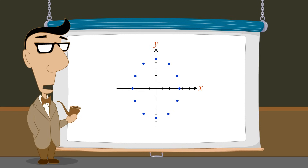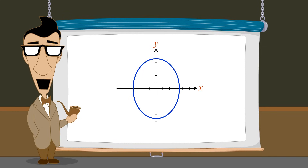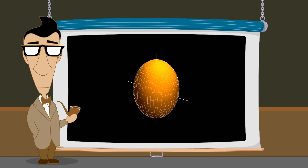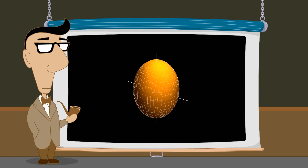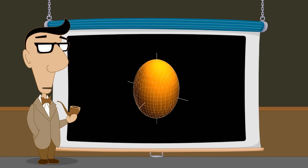Later, we will see how algebraic equations can describe infinite sets of points which, when viewed in this system, appear as shapes in two dimensions. In the next lecture, we will see how a three-dimensional Cartesian coordinate system can be constructed which will allow us to visualize sets of ordered triples in three dimensions.